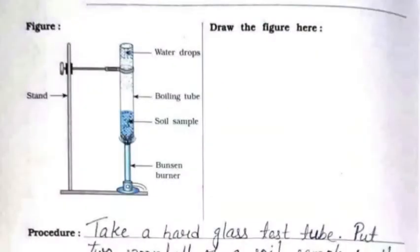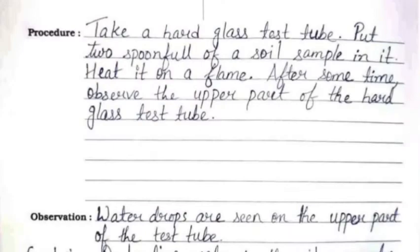If you have not subscribed to my channel till now, please subscribe for more videos. You need to draw the same figure on the right hand side where the space is given. The procedure is: take a hard glass test tube and put two spoonfuls of a soil sample in it. Heat it on a flame.